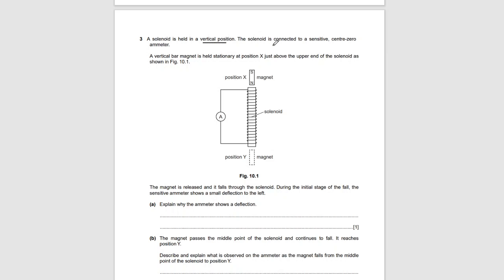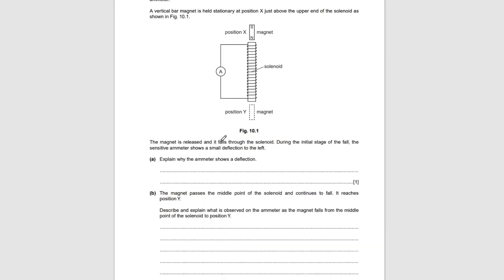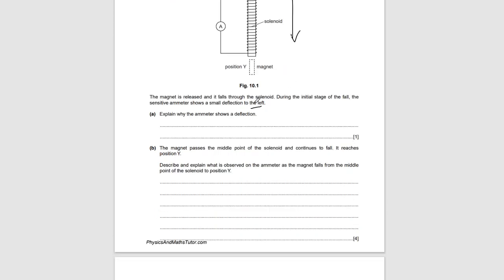A new question: a solenoid is held in a vertical position and connected to a sensitive center-zero ammeter. A vertical bar magnet is held stationary at position X above the solenoid. The magnet is released and falls through; the ammeter shows a small deflection to the left. This is because the magnetic field lines are cut by the solenoid, an EMF is induced, and once an EMF is induced a current is also induced.